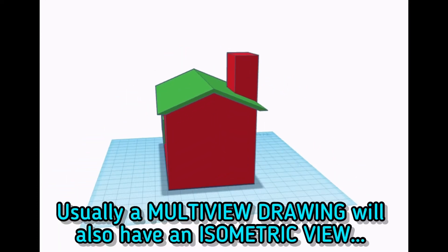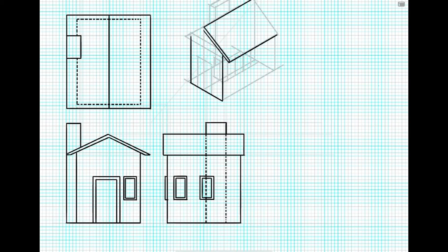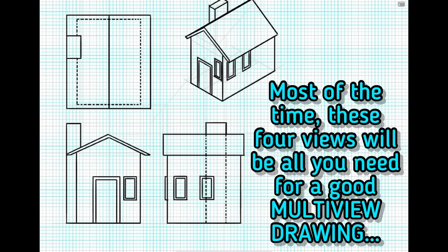Usually, a multi-view drawing will also have an isometric view. The isometric view will go in the top right corner. Most of the time, these four views will be all you need for a good multi-view drawing.